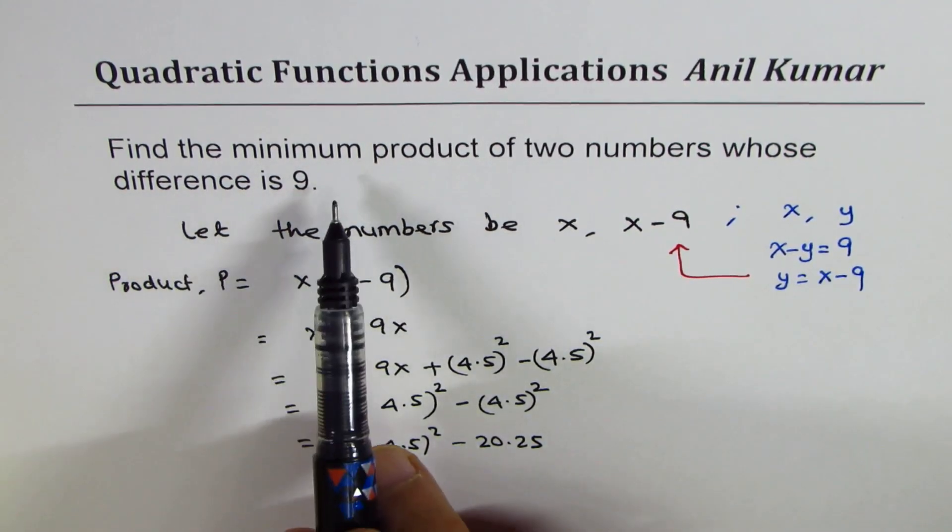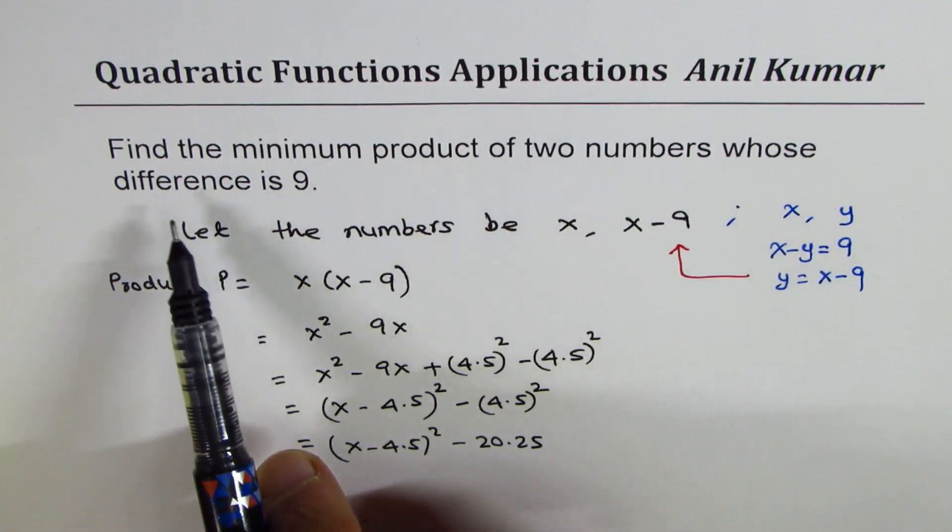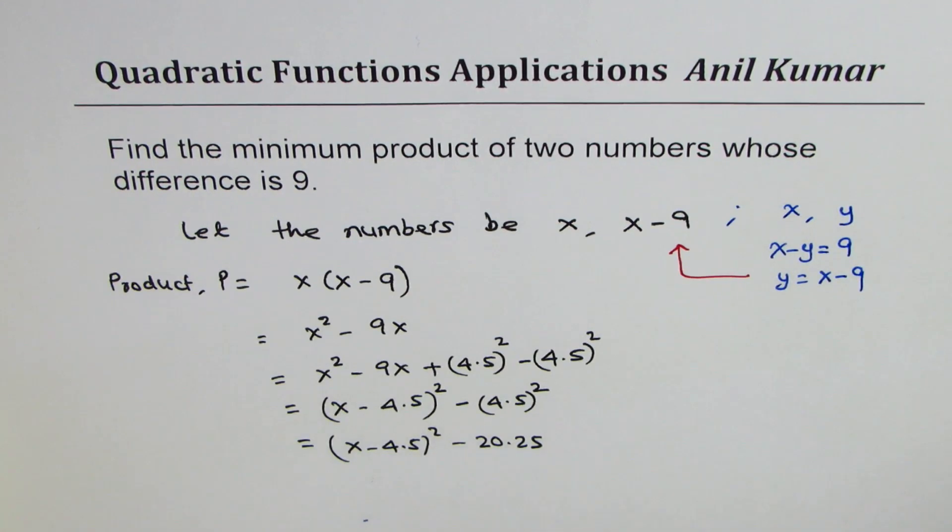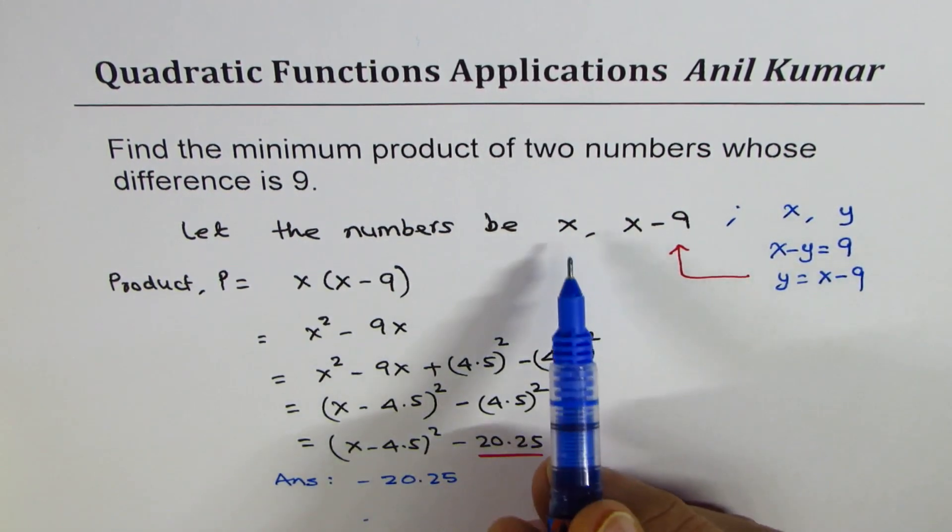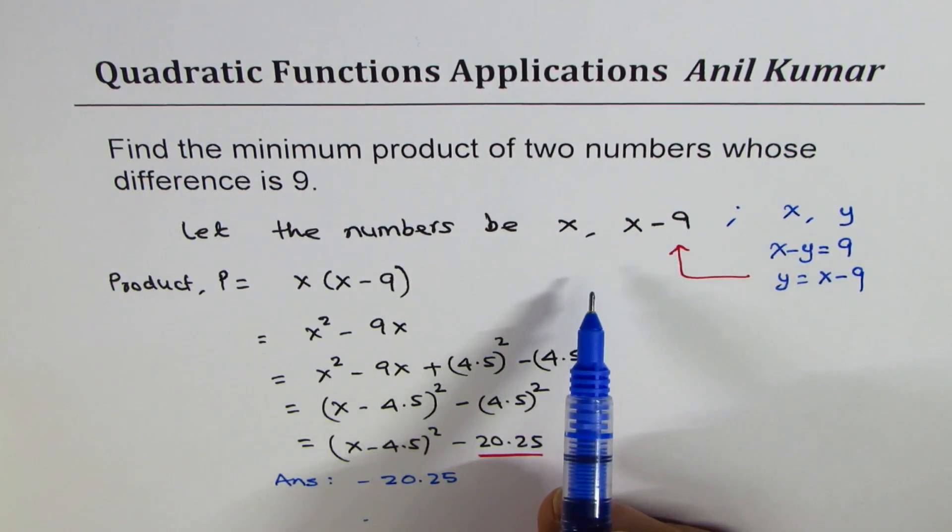So it says find the minimum product of two numbers whose difference is 9. So the minimum product of two numbers will be minus 20.25. The answer is minus 20.25 if the difference between the two numbers is 9.